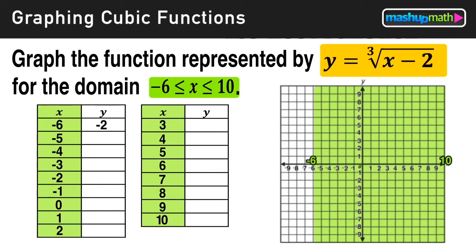Now to find the rest of the y values for this table, you can either repeat this process for each x value or you can use the table on your graphing calculator by inputting this function into y equals, and that would be the cube root of x minus 2. Either way will allow you to find the value of y for each input value of x. Now keep in mind you're going to get a lot of decimals here since only certain numbers are perfect cubes, so that's okay.